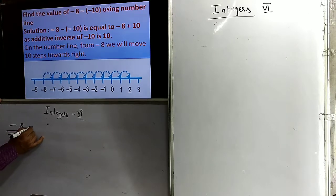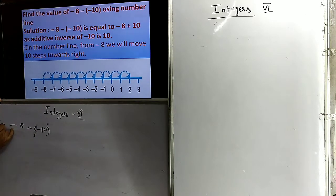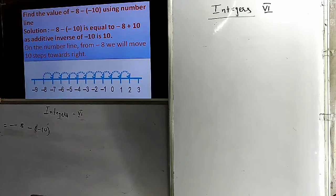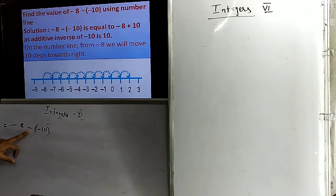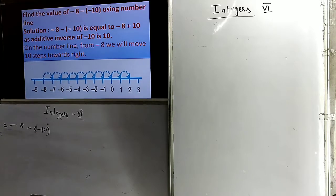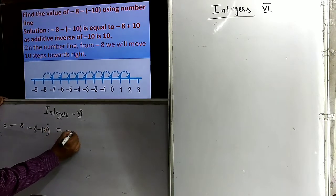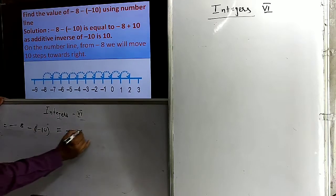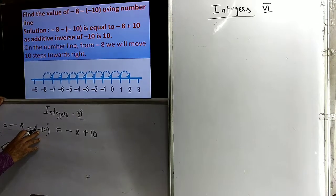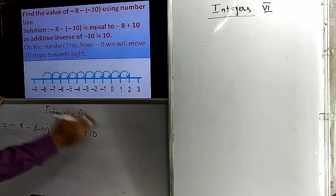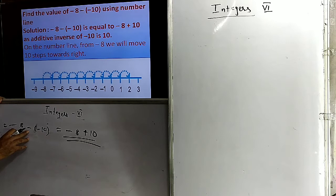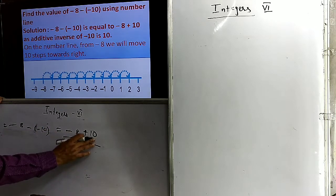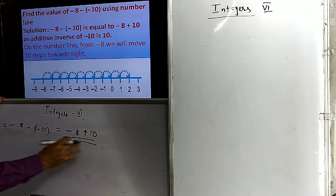Let us do minus 10 minus of minus of minus 10, which simplifies to minus 10 minus of minus 10. First, we simplify the bracket. If the sign outside the bracket is plus, there is no change in the sign inside the bracket. But if there is a minus sign outside, we take the additive inverse of the term inside. So this minus and minus outside the bracket changes the sign, and minus 10 becomes plus 10. When we subtract, we add the additive inverse of the number being subtracted.